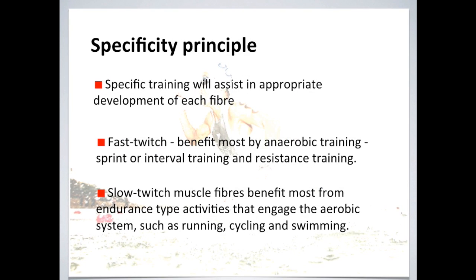It's important to revisit the specificity principle when talking about fast and slow twitch fibres. If we train the aerobic system — continuous training, fartlek training, aerobic interval training — we're training the slow twitch muscle fibres and improving the functioning of our aerobic system. If we're training the anaerobic systems — anaerobic interval training, resistance training — we're going to train and improve those fast twitch muscle fibres.